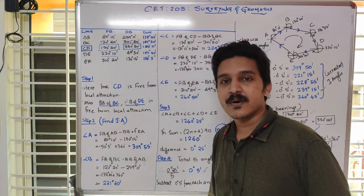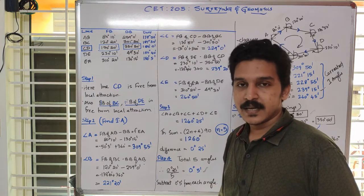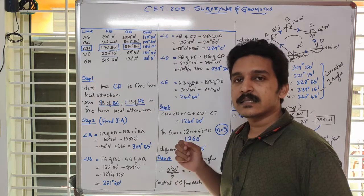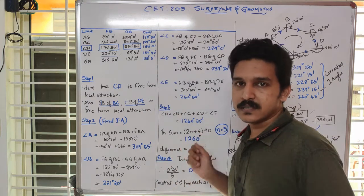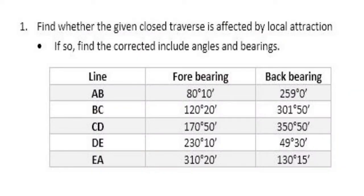In the last class, we discussed about the various steps involved in solving a numerical problem on local attraction. In this class, we will discuss about another similar problem, but there is a slight change in how we proceed with these steps. This problem says that the forebearing and backbearing of various lines of a closed traverse is given. We have to find the included angle, find the local attraction possible in any particular line, identify which line has local attraction, and correct these bearings.